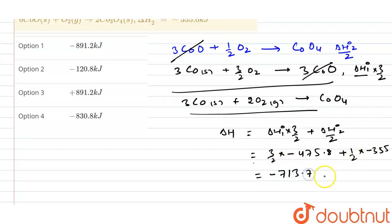So if you calculate this, first one three by two times of this value, so this value will come out to be minus 713.7, and half of this value will be 177.5. So after addition of these two values, because both are negative, this becomes minus 891.2 kJ per mole. So if you see the options, then the first option is the right one.